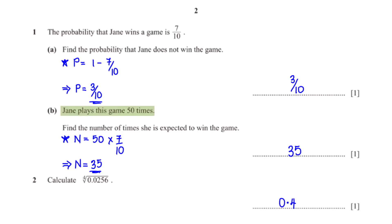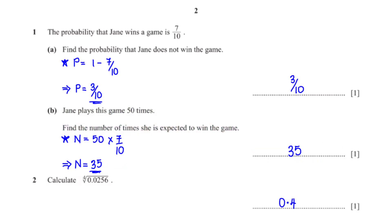Jane plays this game 50 times. Find the number of times she is expected to win. The number of times she is expected to win is 50 times the probability that she wins any single game, which is 7 over 10, giving us 35. Calculate the fourth root of 0.0256: when we type this into the calculator we get 0.4.